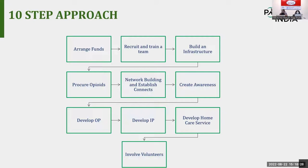Next is volunteers. When you create awareness, you get local champions who will help you build your community volunteer base. It's just a basic flow — if you have funds, you just need a team, infrastructure, and opioids. If you have a team of volunteers, you just need to create awareness and start the palliative care services. Whichever component you have, you build toward the next one.